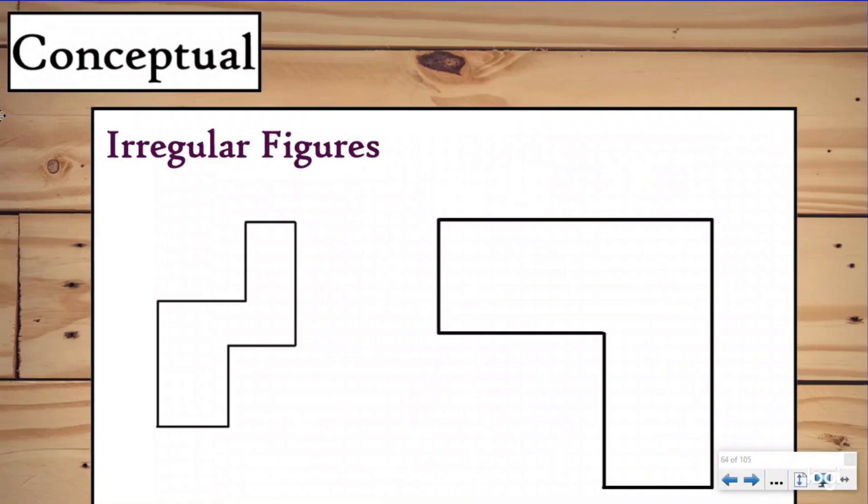Which leads us to an important question. What exactly is an irregular figure? Our definition of an irregular figure is a figure that's made up of one or two shapes put together. So they don't look like a normal rectangle or square or triangle or circle. There are a couple different figures kind of mashed together to make something that doesn't look normal.